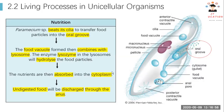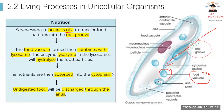For nutrition, paramecium beats its cilia to transfer food particles into the oral groove. The food particles travel into the oral groove and a food vacuole forms. The food vacuole then combines with lysosomes, and the enzyme lysozyme in the lysosomes hydrolyzes the food particles. Nutrients are absorbed into the cytoplasm, and undigested food is discharged through the anal pore.